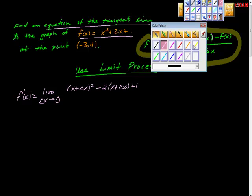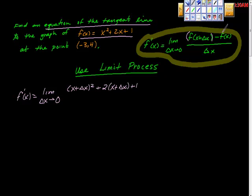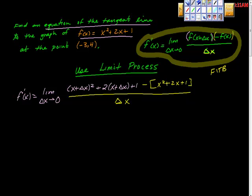Now I'm going to do this second part, which is minus f of x. f of x is x squared plus 2x plus 1. The whole thing is over this change of x. So hopefully you've figured out all I've used right now is FITBA, fill in the blanks.